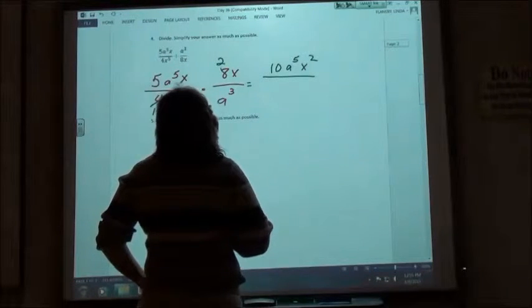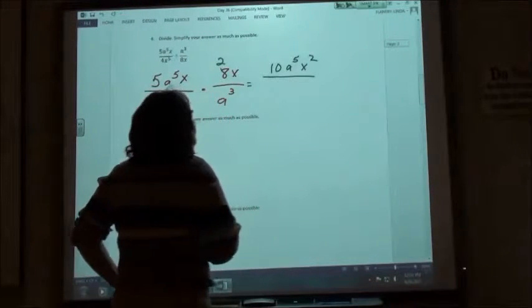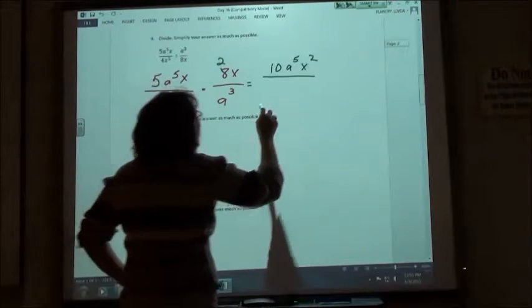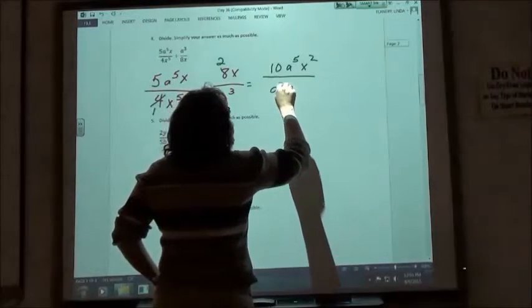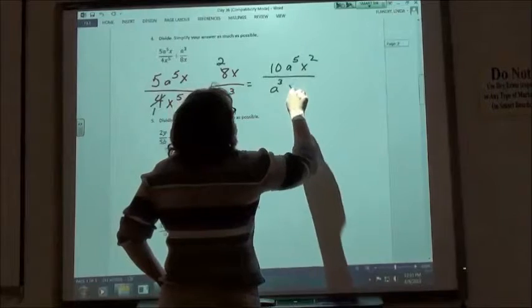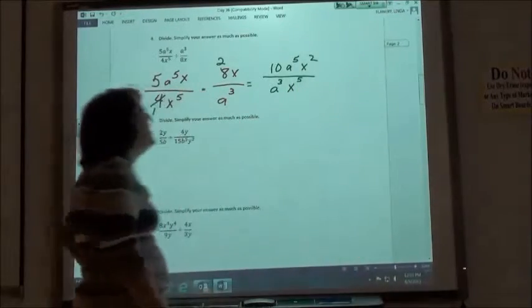Where are you getting a 9 from? A 1 times 9? Oh, that's an a! That'd be an a to the 3rd, and an x to the 5th, right?